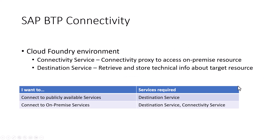In this slide, we see how the SAP BTP connectivity works. In the Cloud Foundry environment, we have two different services: the connectivity service and the destination service. The connectivity service acts as a proxy to access on-prem resources, whereas the destination service allows you to retrieve and store technical info about the target resource. If you have a publicly available service or data service on the Internet, then you need the destination service in your application to connect to it. But if you want to connect to an on-prem data service, then you need both the destination service and the connectivity service.